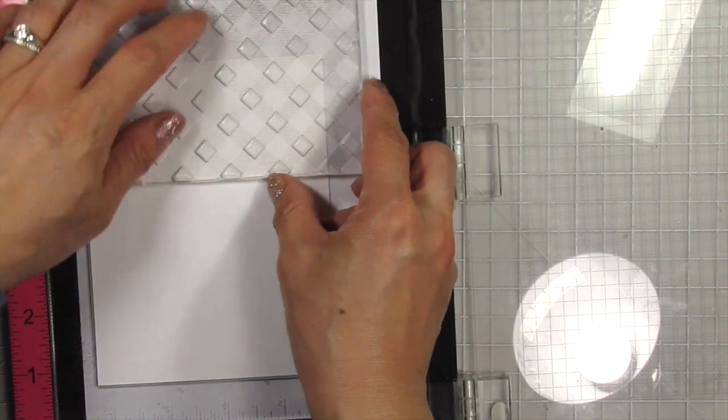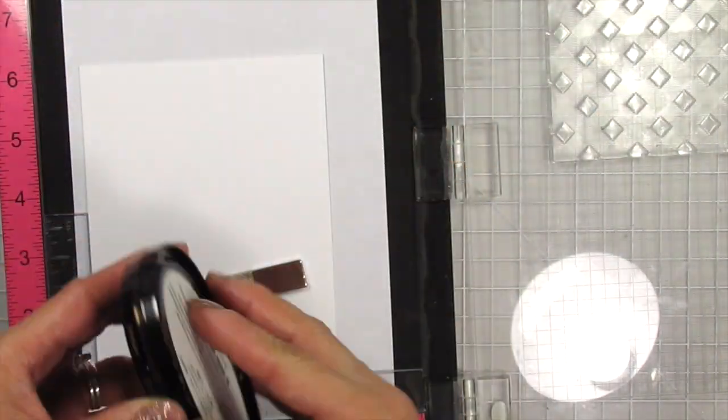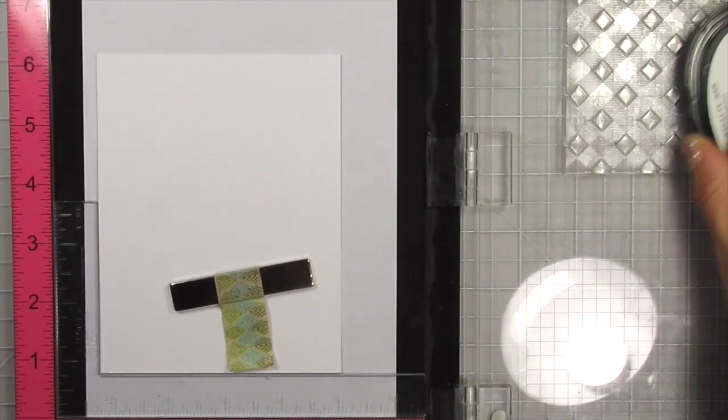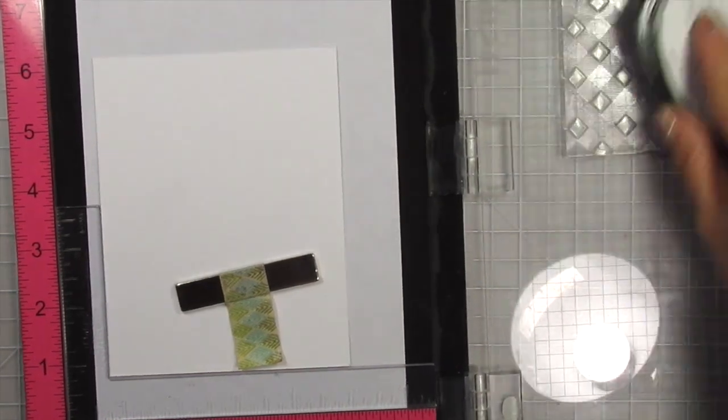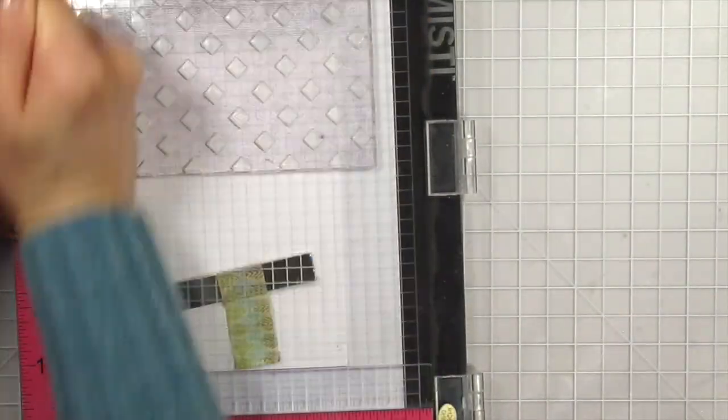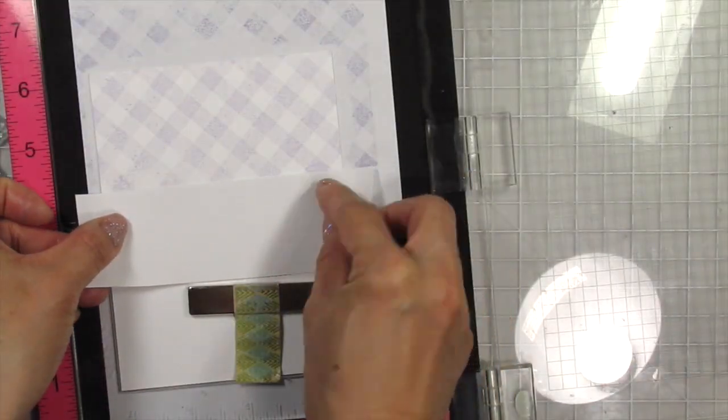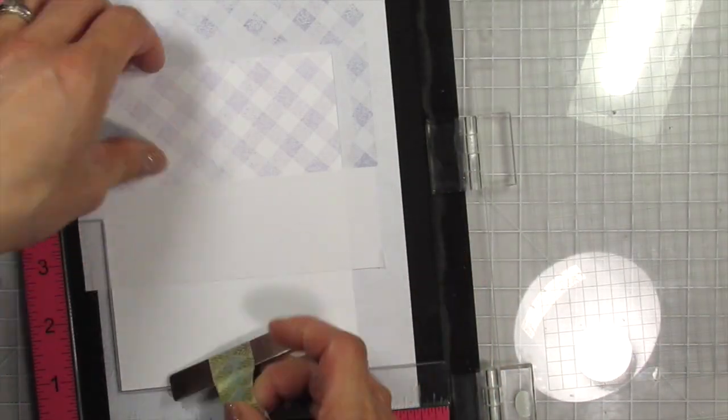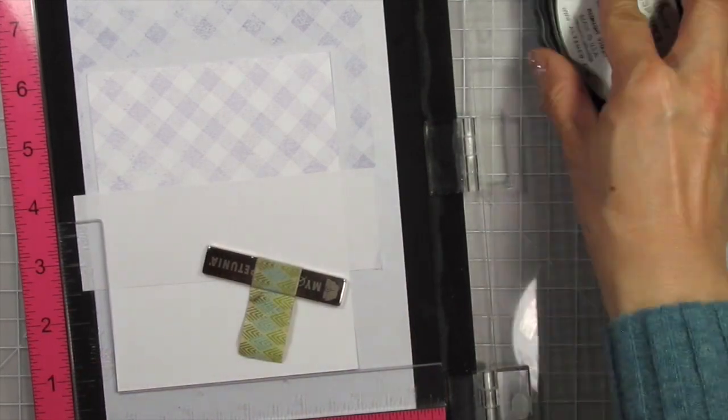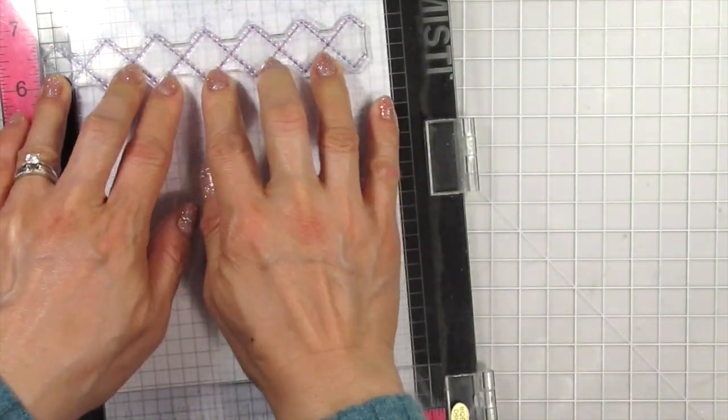I start with Altenew Soft Lilac as a base, then I use Deep Iris, Lavender Fields, and Soft Lilac to stamp the zigzags. You can stamp this accent pattern on the slashes as I'm doing here or you can stamp them on the white sections as I do later. You can also stamp them to overlap each other or you can leave gaps. Initially I left gaps by stamping them corner to corner.